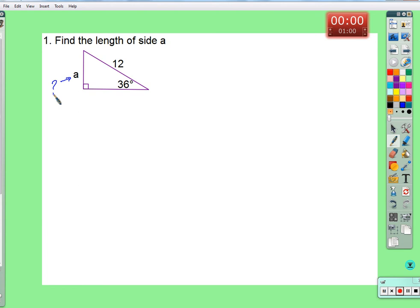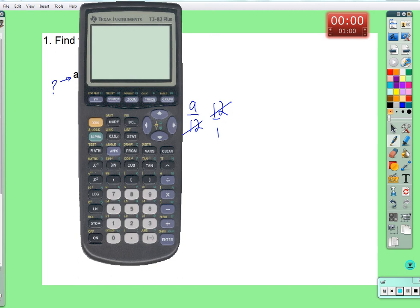So what equation can we set up with those three things? The sine of 36. Of 36. D equals? A over 12. Let's check. Sine is the opposite over hypotenuse. Good. Multiply by 12. So it's 12 times sine of 36. Let's open up the old calculator. Sine of 36. 7.05.